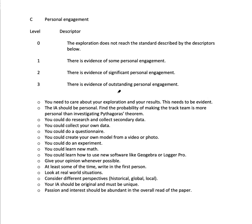Finding the probability of making the track team is more personal than investigating Pythagoras' theorem. You don't have to do a really personal IA where you go to Ski Dubai or create a model of yourself and find the probability you can make the swim team. It doesn't have to be all about you — it can be about something else, countries or whatever — but it helps if it's about you, or at least something you're interested in, or a country you're from. Don't go down the route of investigating Pythagoras' theorem or anyone's theorem, unless you've got your own really interesting personal take on it. My general rule is: if you can find it in a book or on some website, don't do it — it's already been done before.